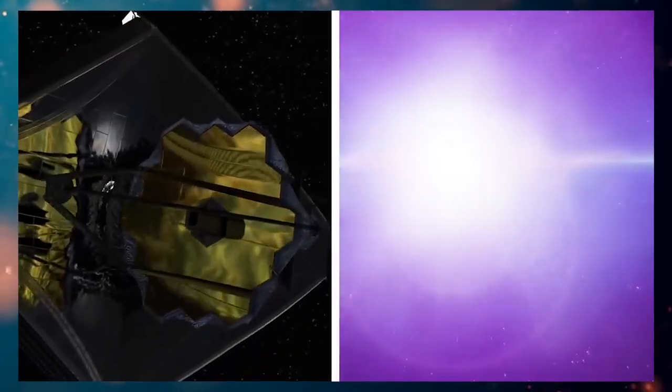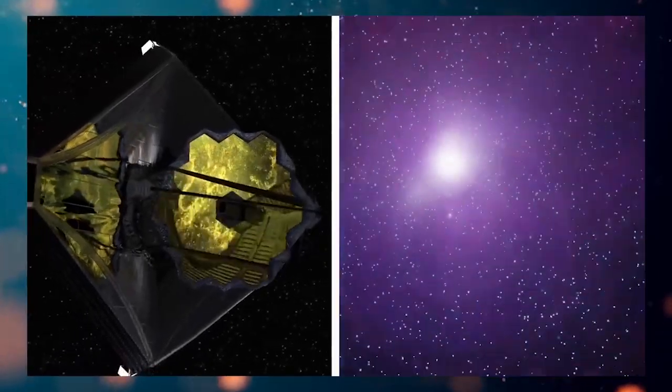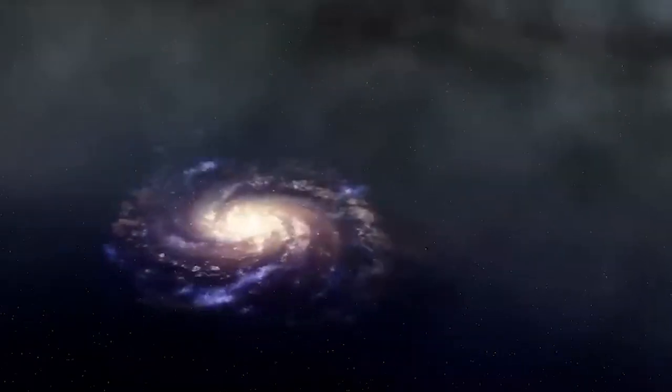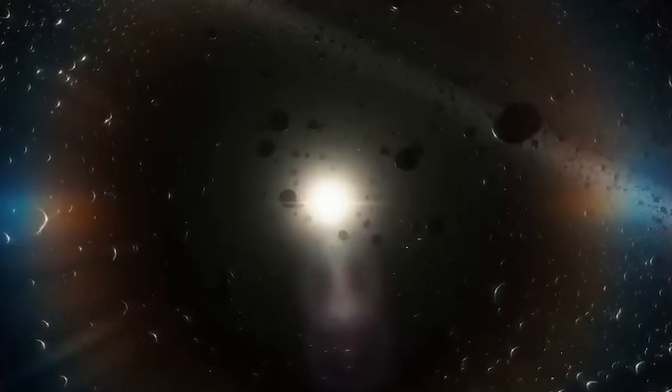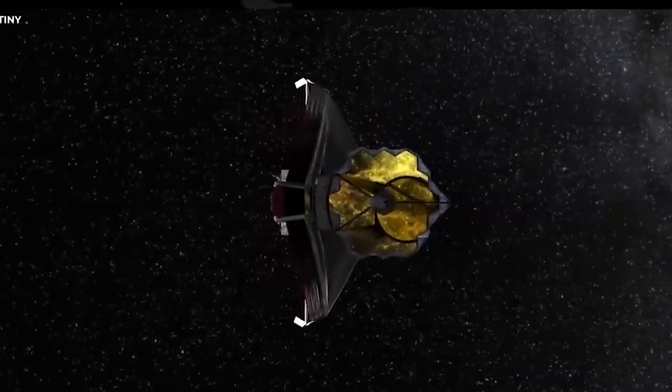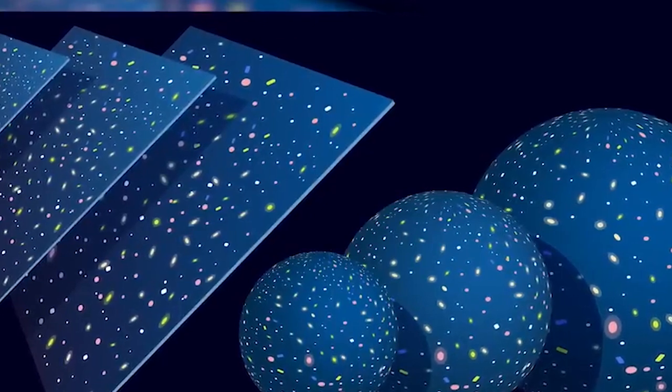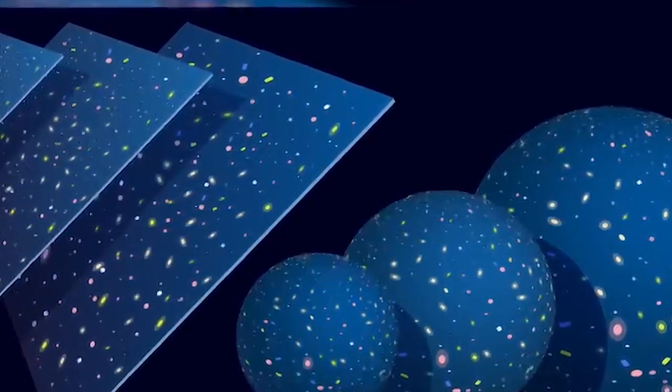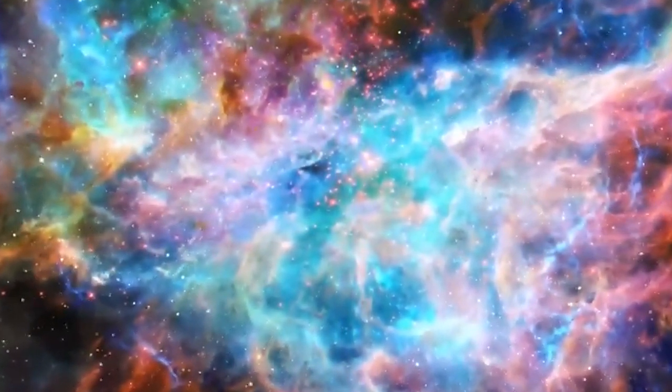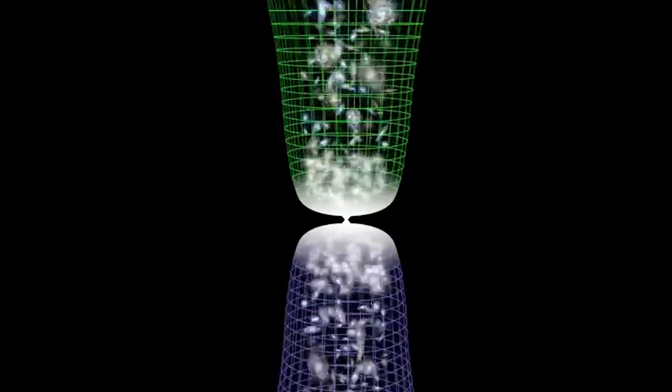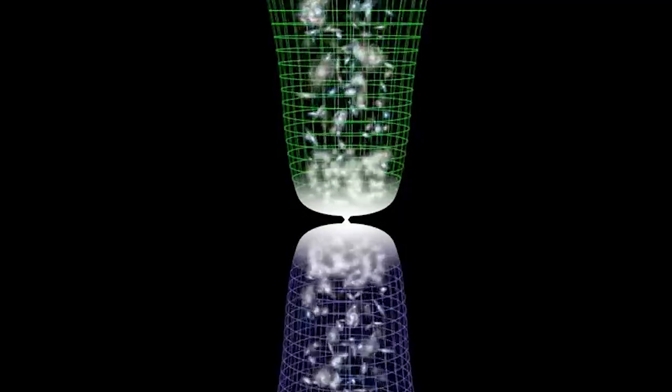The JWST's innovative instrumentation includes features such as coronagraphs, which will allow astronomers to directly image exoplanets and study their atmospheres. This groundbreaking capability has the potential to revolutionize our understanding of extrasolar planetary systems and their potential habitability.